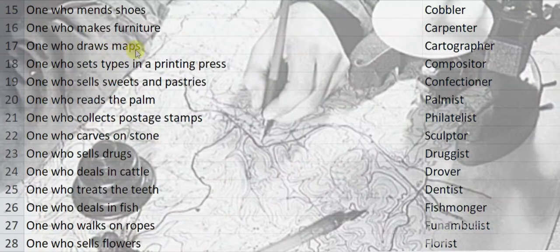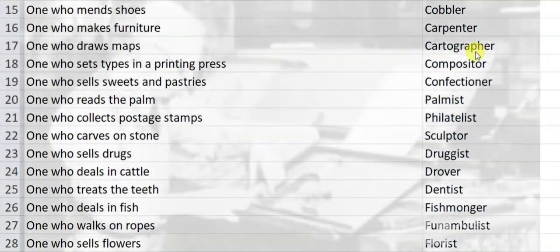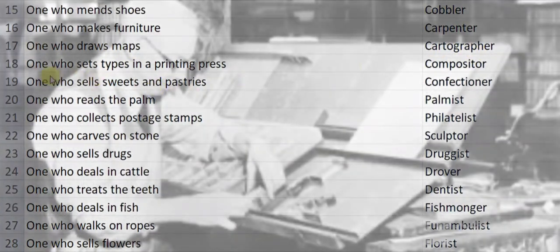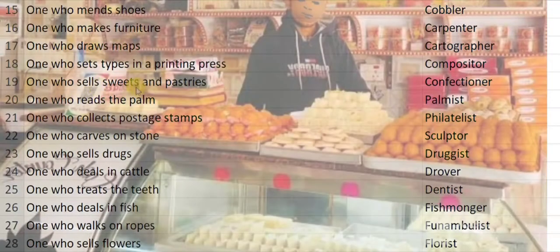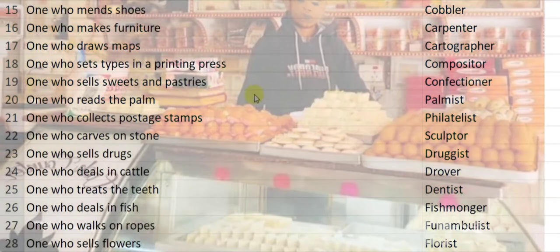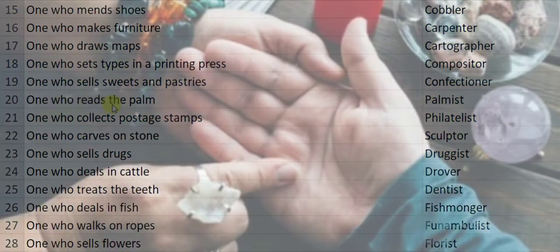One who draws maps is a cartographer. One who sets types in a printing press is a compositor. One who sells sweets and pastries is a confectioner.